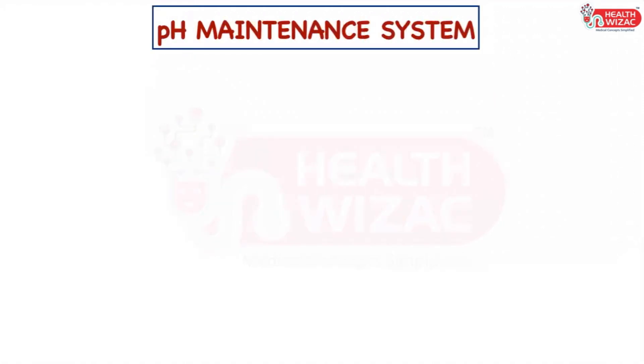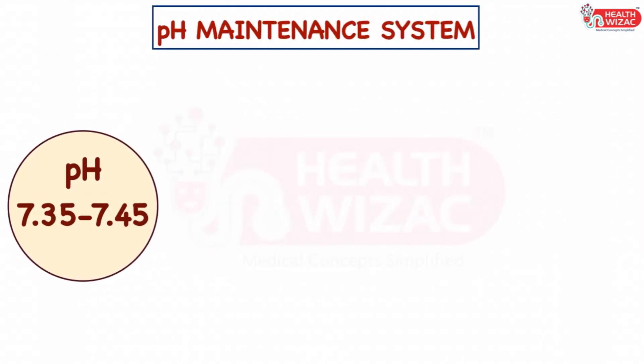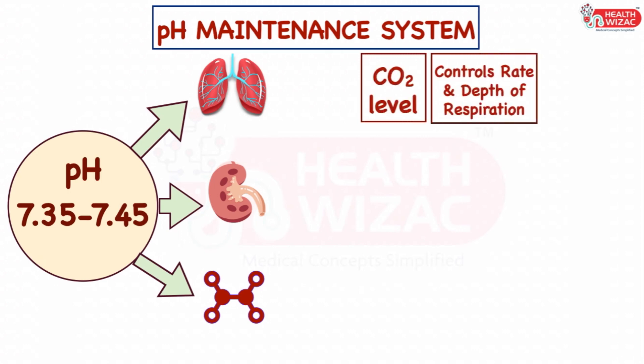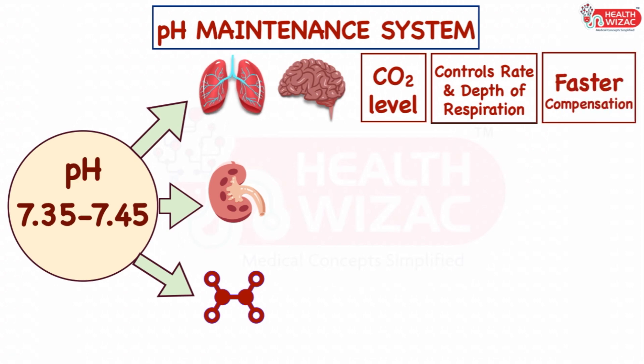Normal blood pH is between 7.35 to 7.45 and is usually maintained with the help of lungs, kidneys, and the buffer system. Lungs maintain blood pH by regulating the CO2 or carbon dioxide level through alteration in depth and speed of respiration, which is triggered by chemoreceptors present in the brain. Lungs are usually faster, and compensation is achieved within minutes.